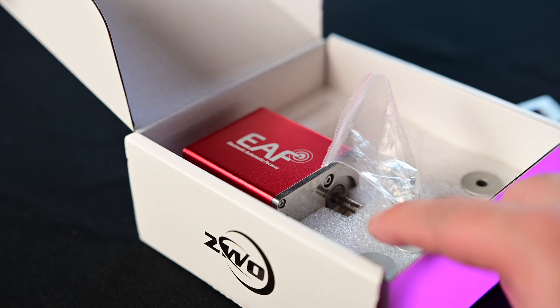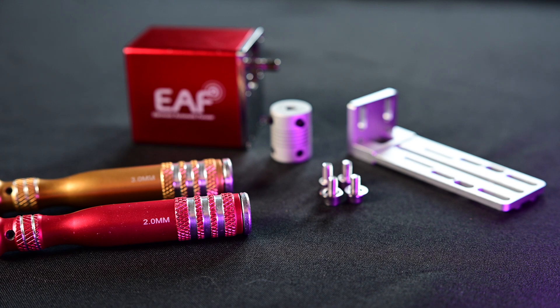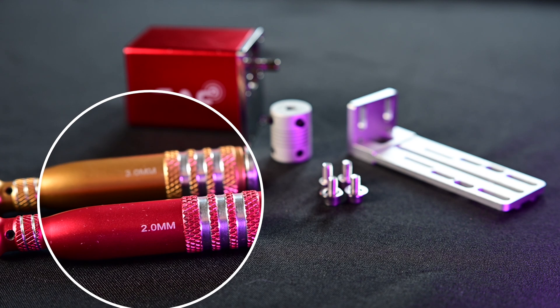You have some screws, some grub screws, also some washers, and then you have four collars in the box. This takes the place of the focusing knob on your telescope.